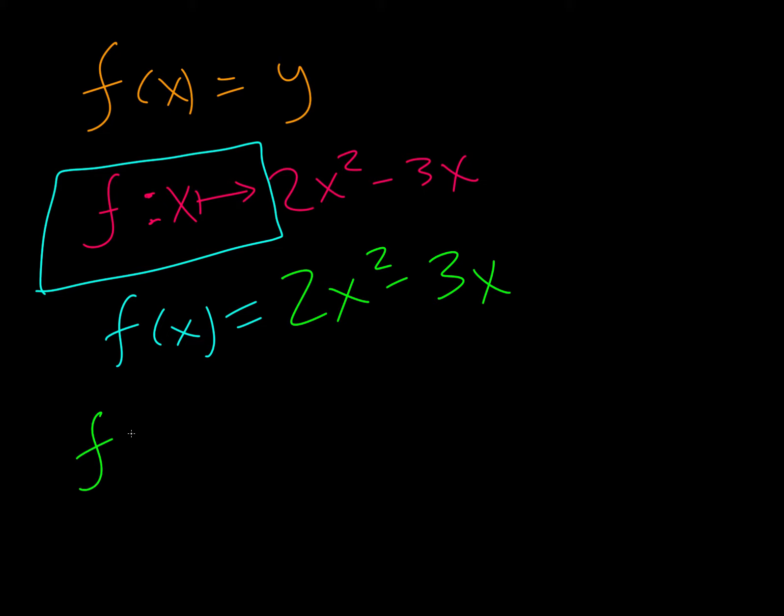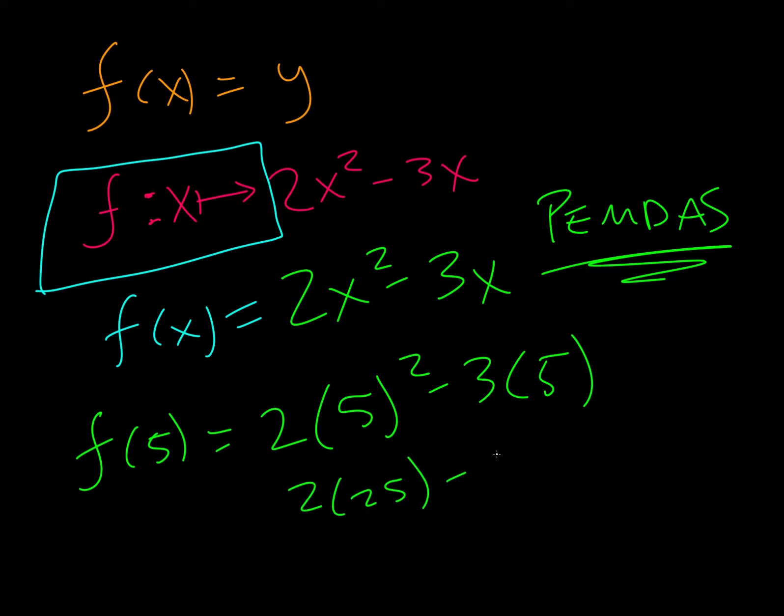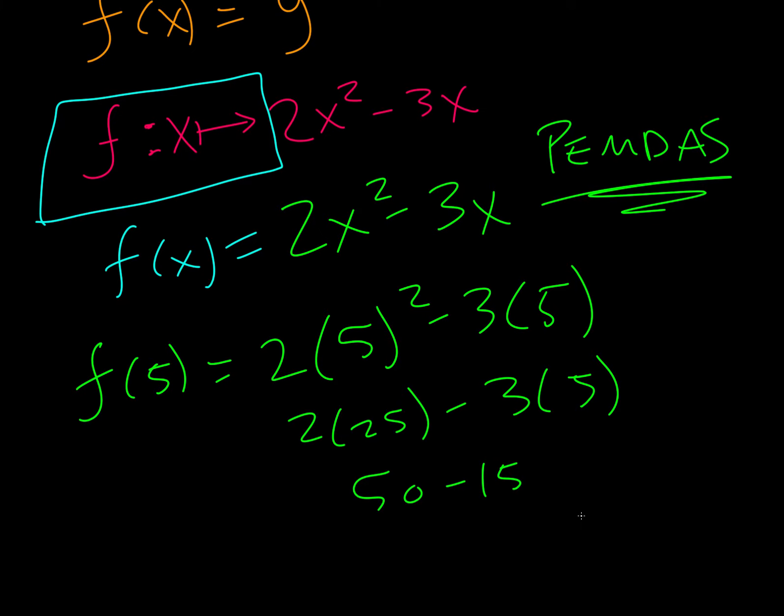So the first thing is they want us to find f of 5. So what that means is, since we replaced x with 5, we're going to replace these x's with 5's. So just follow PEMDAS. We need to do exponents first. So that's 25. Now we can do multiplication. So that's 50 minus 15. And then that is 35. So f of 5 equals 35.